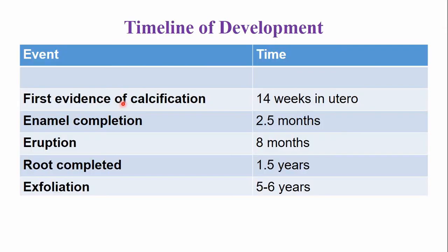The calcification of the mandibular central incisor begins around the age of 14 weeks in utero. These ages are important to remember from the clinical and forensics point of view — for example, to estimate the age of the fetus. The enamel completion occurs around the age of two and a half months, and the tooth emerges into the oral cavity around the age of eight months.